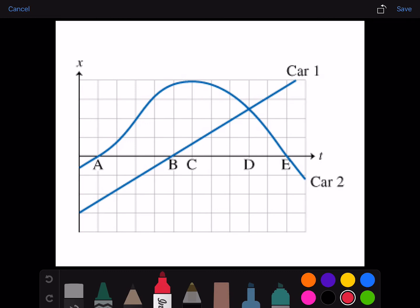Part A. At which of the times do the two cars pass each other? The cars will pass each other when their graphs intersect. That is time D.